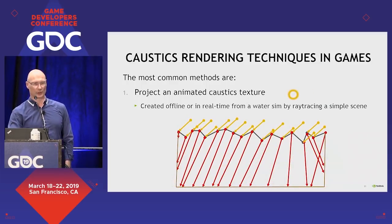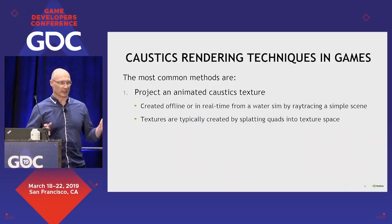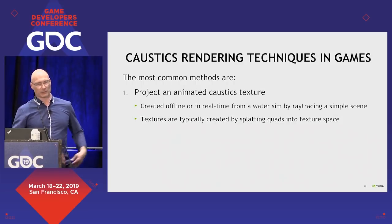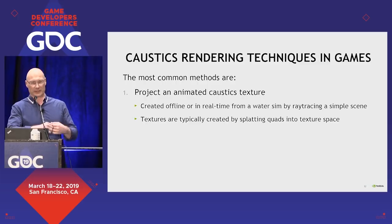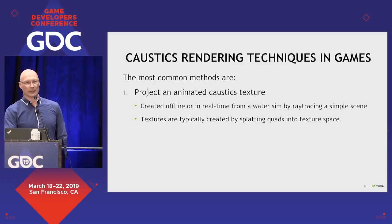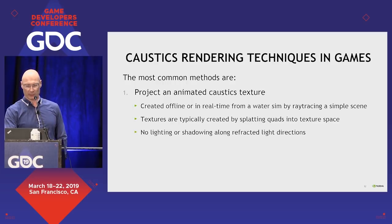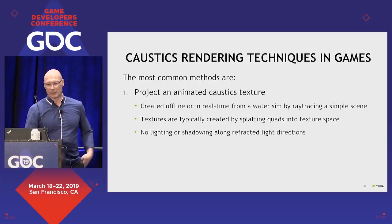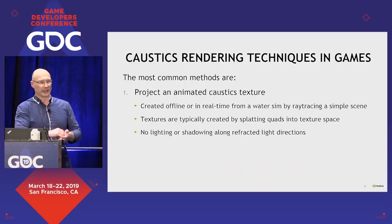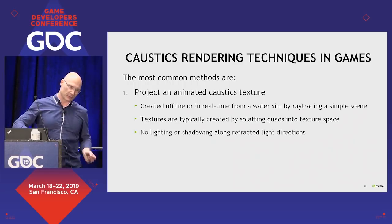Some people go further and use the inside of a box or a bowl — whatever is simple enough to be done in real-time in a shader. Then, for a very dense water mesh or even a texture containing one, you splat quads at the intersection points. This is how you create your dynamic caustics texture, and it works fairly well. The problem is that you don't really get the real lighting along the refracted/reflective directions, and you don't get the shadows from these refracted light rays.